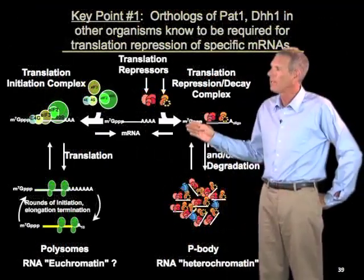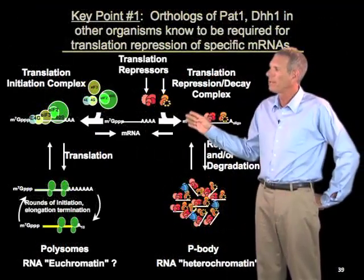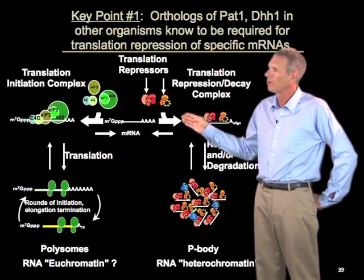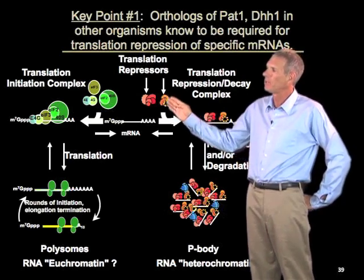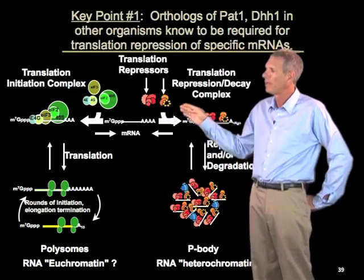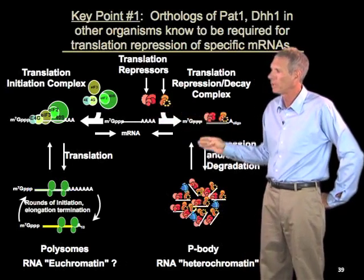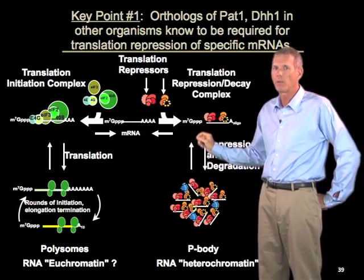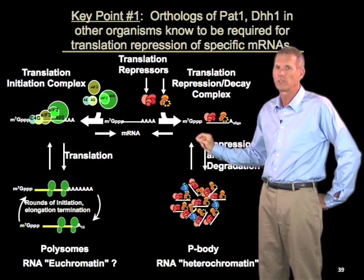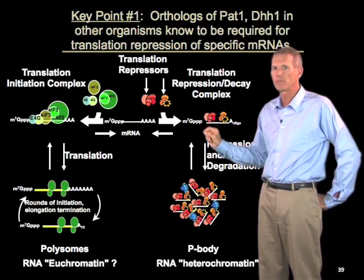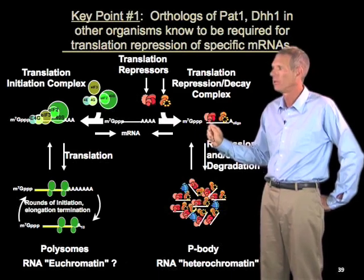A key point that led to this kind of model has come from an examination of the proteins that are involved in triggering mRNA decapping and P-body formation as studied in yeast. And what we know about those proteins is that orthologs in other cells are required for the translational repression of specific mRNAs.